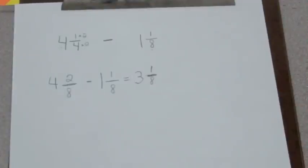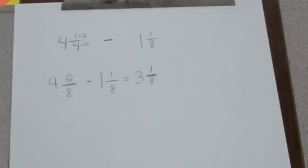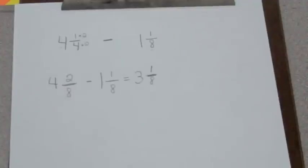I keep my denominator the same — it's an 8, don't change it. Now my numerators: 2 minus 1 is 1. Can I reduce that? Nope, I can't — it's as low as it'll go. So the answer is three and one eighth. That is how you add and subtract mixed numbers. I hope you have a great weekend. I'll see you back here on Monday. I am going out to play because I'm done — I finished my homework.